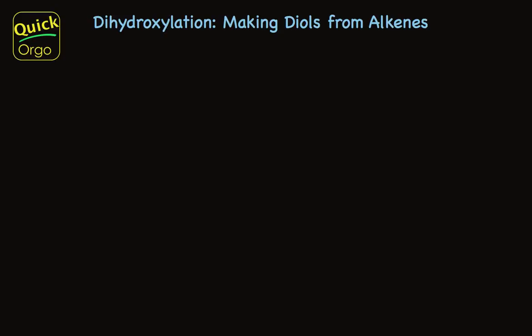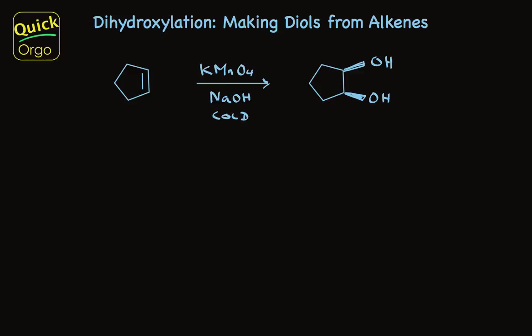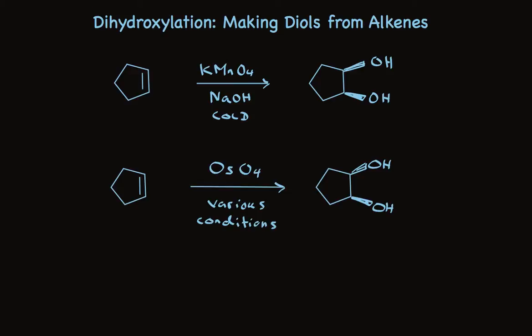Take a look at this alkene addition reaction. When cyclopentene is treated with permanganate, aqueous base, cold conditions, the pi bond is broken and two hydroxyl groups are added to the adjacent carbons. That's not the only way to do this reaction — osmium tetroxide, together with one of a variety of reagents, accomplishes the same transformation. We make the cis-1,2-diol from cyclopentene. I picked the cyclic alkene because the cis-stereochemistry makes it totally clear that this dihydroxylation takes place with syn addition.